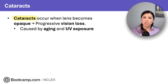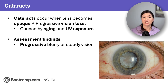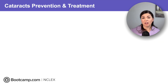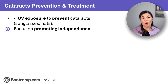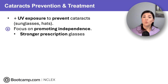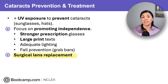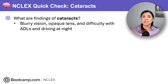So now let's talk about cataracts — a gradual clouding of the lens caused by UV exposure and aging. Clients with cataracts will often have progressive blurry or cloudy vision, an opaque lens, and difficulty with tasks like ADLs and driving at nighttime. We should teach the client prevention by avoiding UV exposure, such as wearing sunglasses and hats. For early treatment, it is all about promoting independence and ADLs — with stronger prescription glasses, large print text, and maintaining safety with adequate lighting and fall precautions like grab bars. Remember, the only way to truly correct cataracts is through surgical lens replacement. Signs of cataracts include progressive blurry vision, opaque lens, and difficulty with ADLs and driving at night.